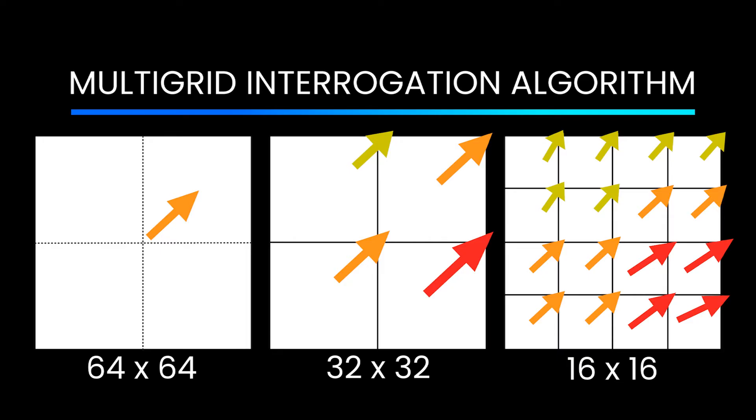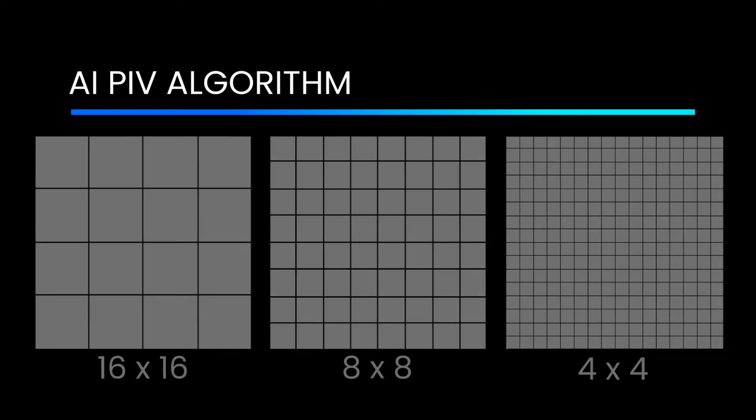For all practical purposes, there is no benefit to go beyond a 16x16 pixel grid because the correlation will be lost due to larger displacement. There is, of course, single pixel ensemble correlation, but it's an entirely different story.